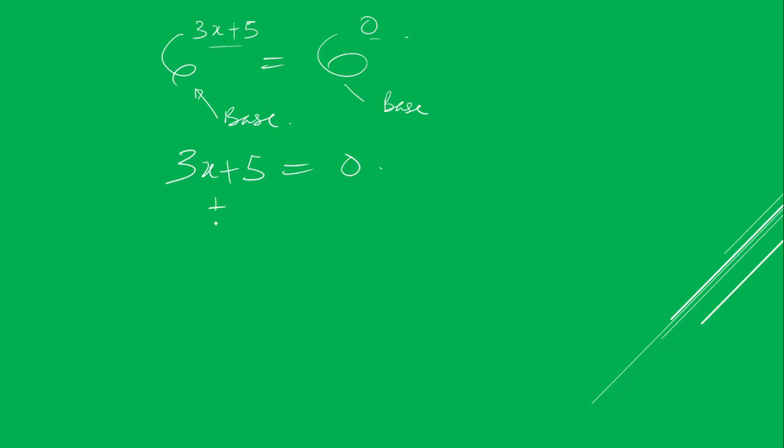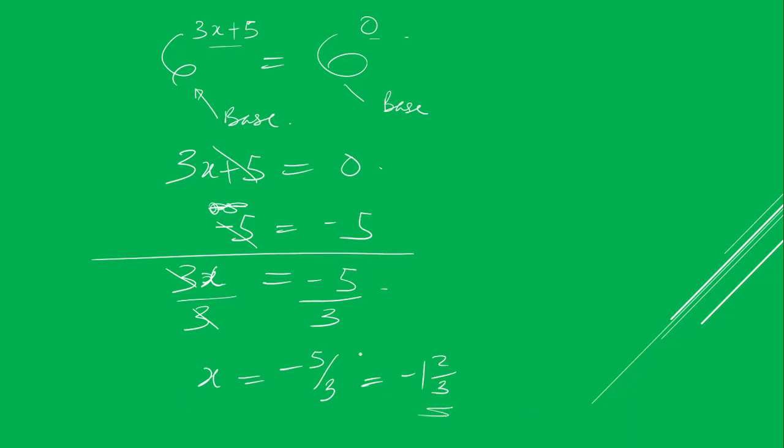What we do now is we add minus 5 to both sides. This minus 5 will cancel, and you now have 3x which is equal to minus 5. For us to now find our x, we divide both sides by 3. So 3 cancels here, and you have x is equal to minus 5 over 3, which is the same as minus 1 and 2 over 3. So this is the final answer. Our x is equal to minus 1 and 2 over 3.